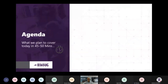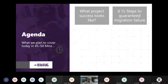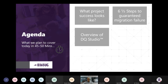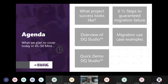So let's start off with just the agenda — a quick high-level overview over the next 45 to 50 minutes. We're going to have a very quick look at what project success looks like, then talk about the six and a half steps to guaranteed migration failure, a quick overview of DQ Studio and its capabilities, some migration use case examples, a quick demo of the DQ Studio product, and then any questions. Feel free to jump in and ask any questions.